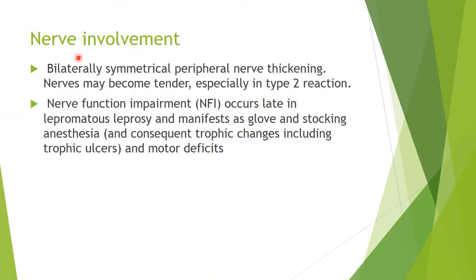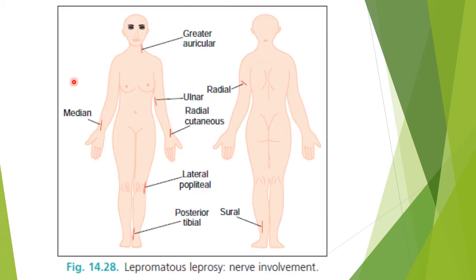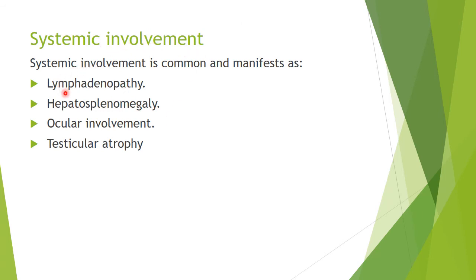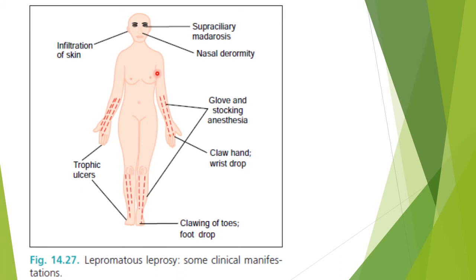Nerve involvement in lepromatous leprosy is usually bilaterally symmetrical. There is peripheral nerve thickening, and nerves may become tender especially in type 2 reaction. Nerve function impairment occurs late, manifesting as glove-and-stocking anesthesia and trophic changes including trophic ulcers and motor deficits. Nerves commonly involved are the greater auricular, median, radial, ulnar, radial cutaneous, lateral popliteal, posterior tibial, and sural nerves. Systemic involvement includes lymphadenopathy, hepatosplenomegaly, ocular involvement, and testicular atrophy. Other clinical manifestations include skin infiltration, nasal deformity, superciliary madarosis, claw hand, wrist drop, clawing of toes, foot drop, and trophic ulcers.